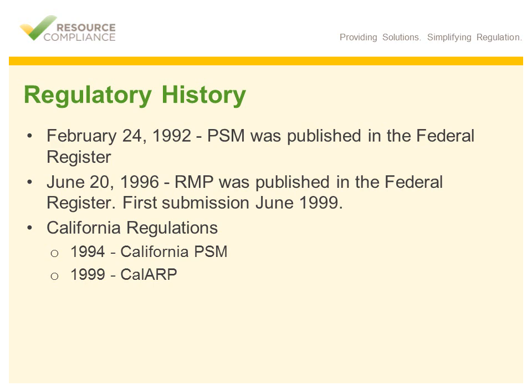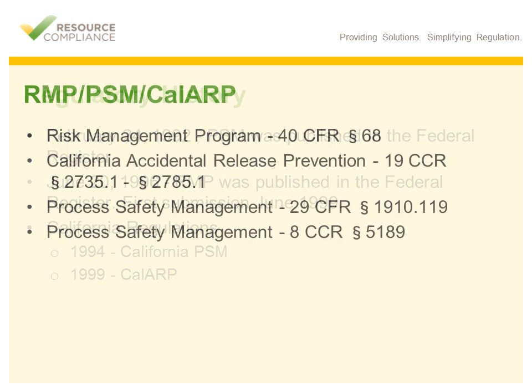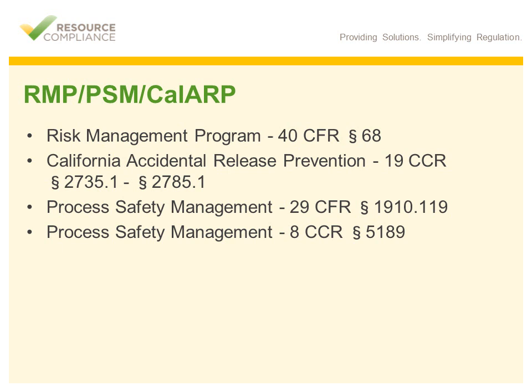For the purposes of Resource Compliance Online Process Safety Training, when we refer to process safety, we are specifically referring to the following four regulations: first, Risk Management Program; second, the California Accidental Release Prevention, or CalARP Program; third, Federal Process Safety Management (PSM); and fourth, California Process Safety Management (PSM).